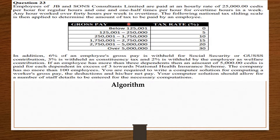Employees of JB and Sans Consultants Limited are paid at an hourly rate of 25,000 cities per hour for regular hours and one and a half times per hour for overtime hours. Any hour worked over 40 hours per week is overtime. A national tax sliding scale is applied to determine the amount of tax to be paid. Additionally, six percent of gross pay is withheld for social security, three percent as constituency tax, and two percent as a welfare contribution.